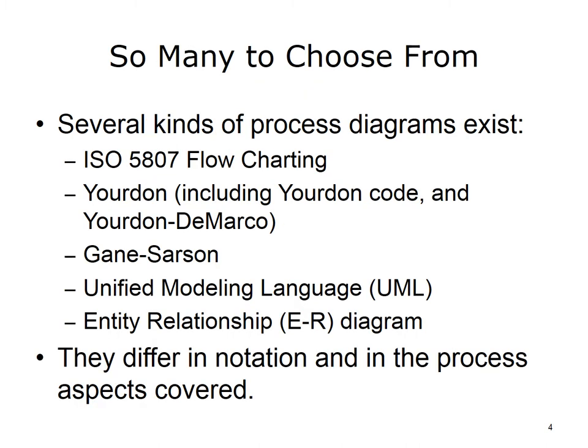There are different kinds of process diagrams. They differ in the aspects of processes they represent and in the notations — i.e., symbols and conventions used for diagramming or mapping processes. The types of diagrams covered in this unit include ISO 5807 information processing diagrams (the same symbols used for flow charting), YORDAN notation for data flow diagrams, Gane-Sarson notation for data flow diagrams, Unified Modeling Language (UML), and Entity Relationship (ER) diagrams that concentrate solely on information content. This lecture provides a brief introduction and overview to process aspects — for example, informational versus process steps — that are covered by each diagram type.